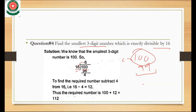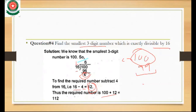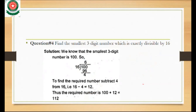16 times 7 gives a greater value than 100, so we use 16 times 6 which is 96. Subtracting 100 minus 96 gives a remainder of 4. To find the required number, subtract 4 from 16: 16 minus 4 is 12. Then add 12 to the smallest three-digit number: 100 plus 12 is 112. So 112 is the smallest three-digit number exactly divisible by 16.